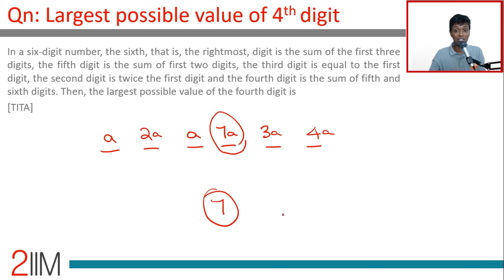There's only one possible value: seven. Since it's not zero, a equals one, giving us seven as the answer.